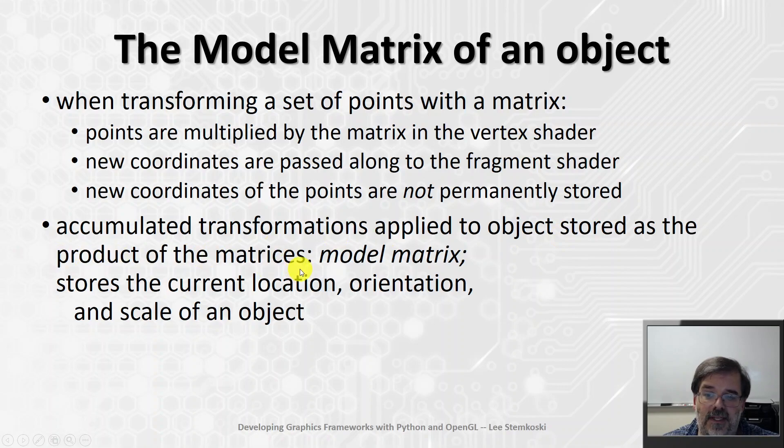The way we store this, we'll store the product of those matrices, and that product is called the model matrix. Every translation, every rotation that has been done that defines the current state of the object is just stored as a single matrix. It is a little bit tricky to recover some of the information. The location you can read off as the rightmost column in that matrix, but retrieving the orientation and scale is a little bit more complicated. But that's okay, we don't really need to do that. But this idea of a model matrix is actually going to help us apply matrices as local transformations.